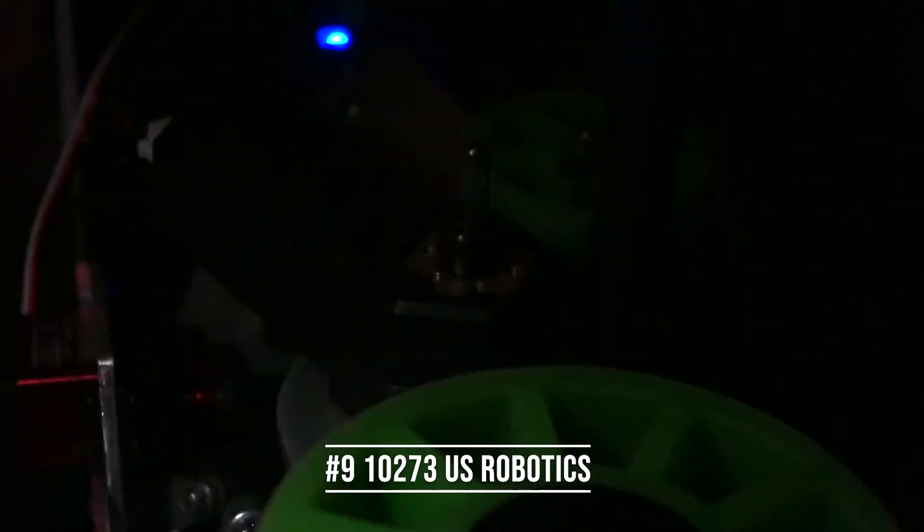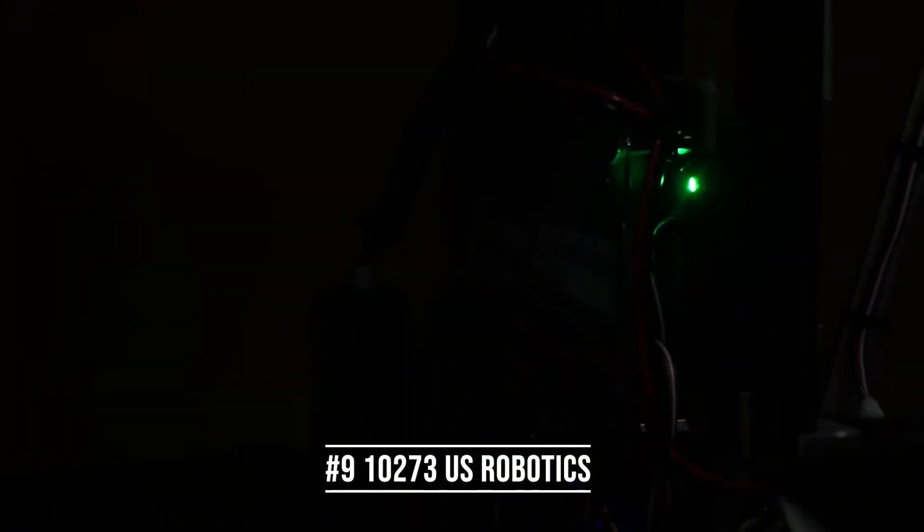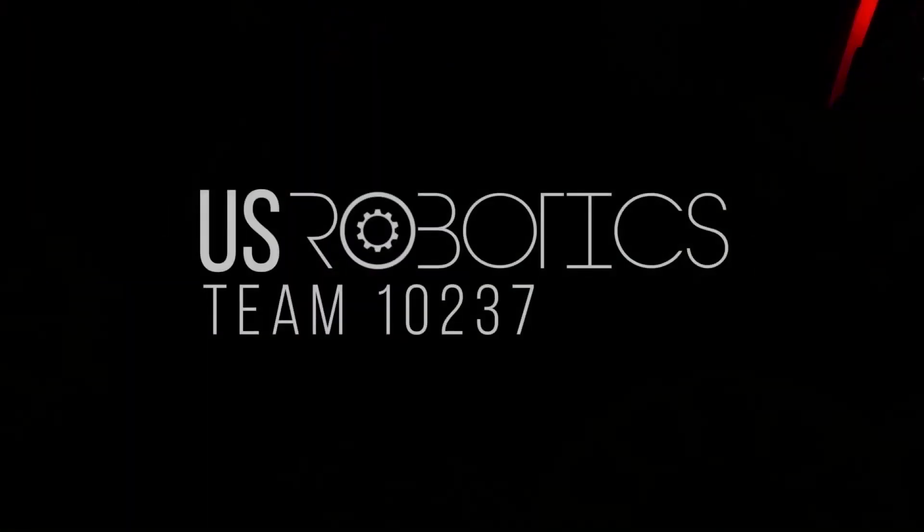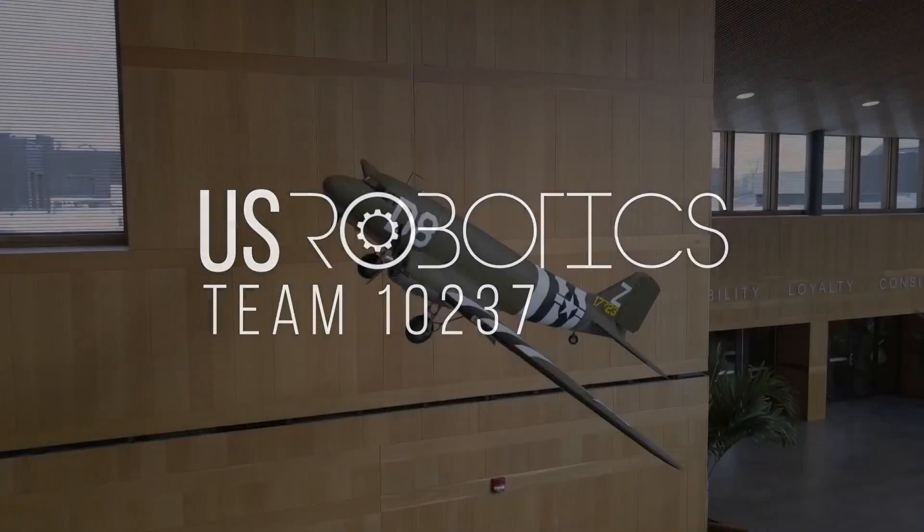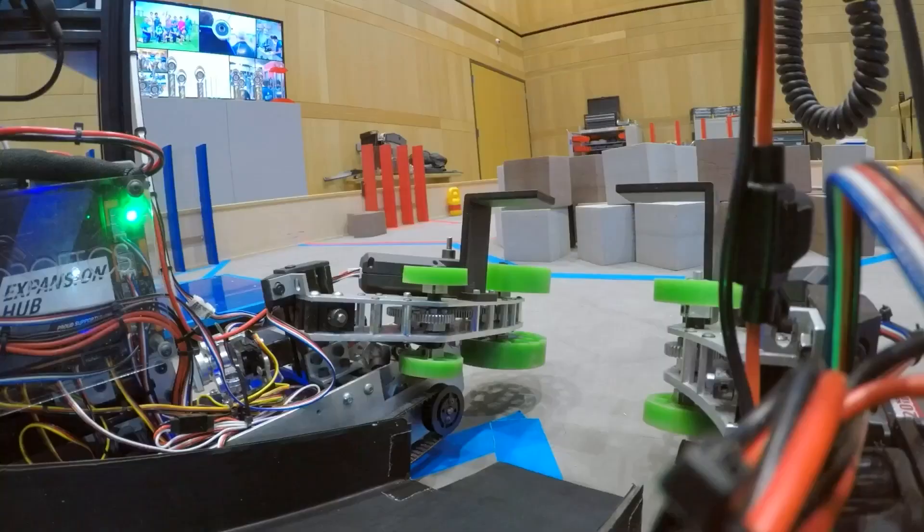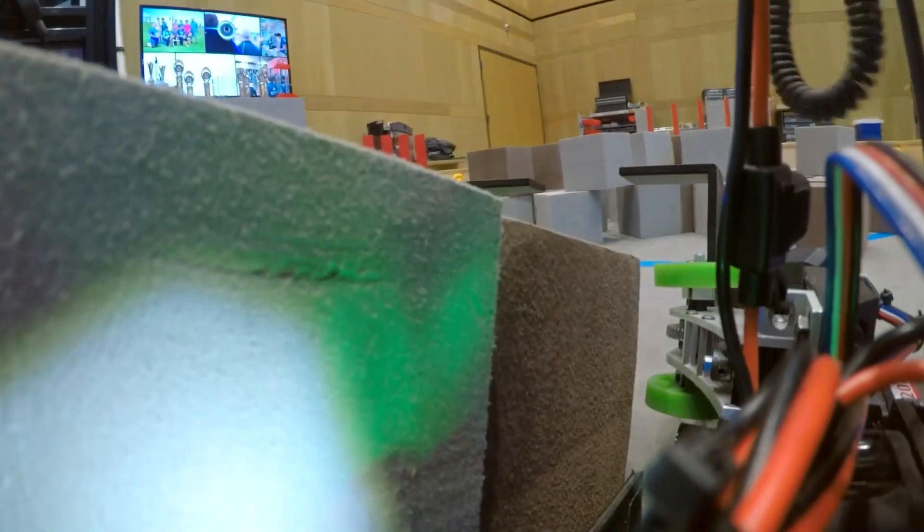In the 9th spot we've got the Relic Recovery reveal from team 10273 US Robotics. This reveal does an awesome job with lighting. They start out with the robot in the dark and add moving lighting to create an insane effect which synced with the music. They use drone footage indoor to show off a cool vintage airplane in their meeting space. They added some robot POV footage to show off all the features of the robot. Overall it's a super beautiful reveal.